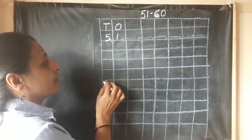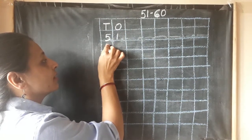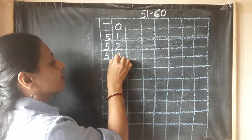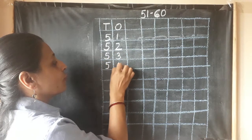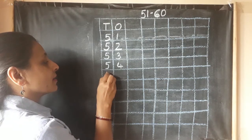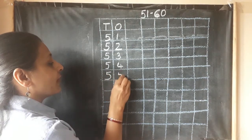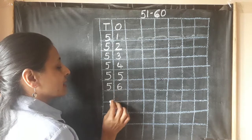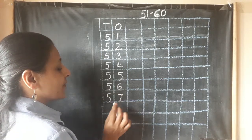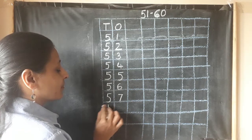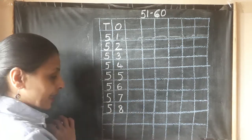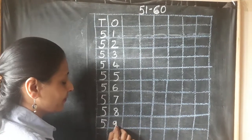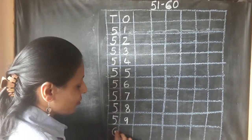5, 1, 51. Now, we are not going to leave the box. 5, 2, 52. 5, 3, 53. 5, 4, 54. 5, 5, 55. 5, 6, 56. 5, 7, 57. 5, 8, 58. What comes after 5, 8, 58? Yes, 5, 9, 59 and 6, 0, 60.